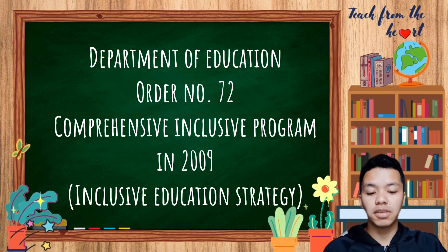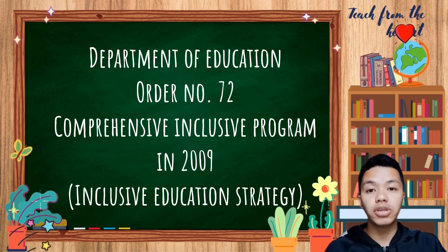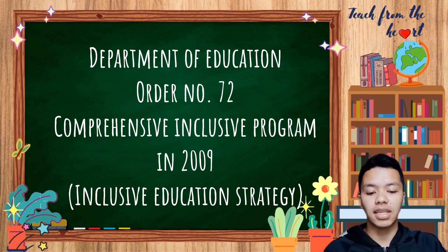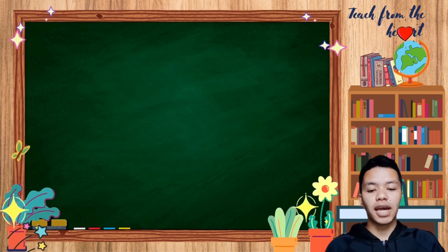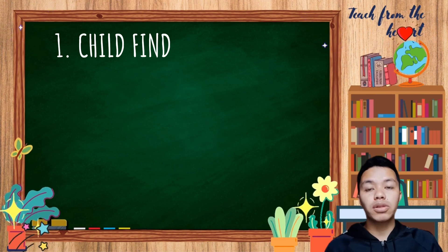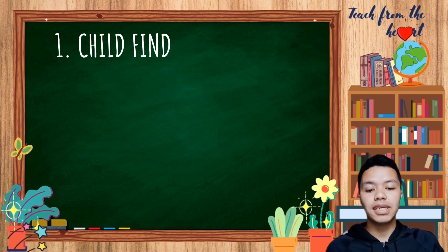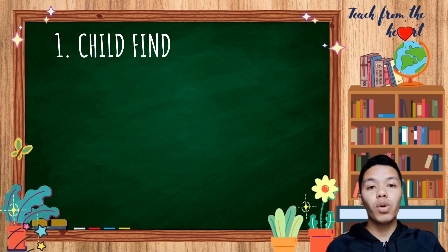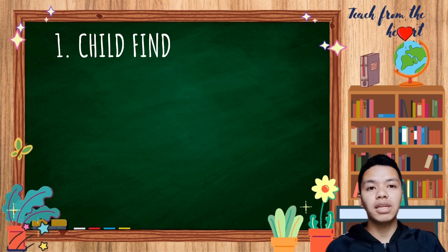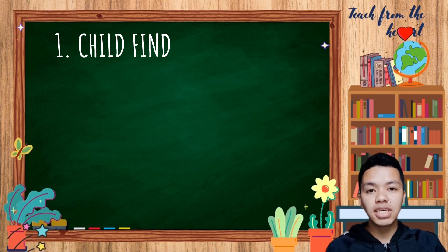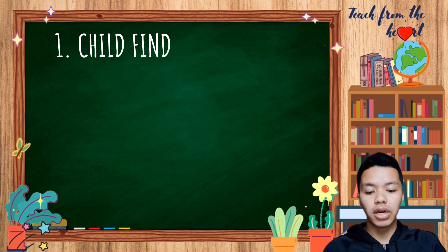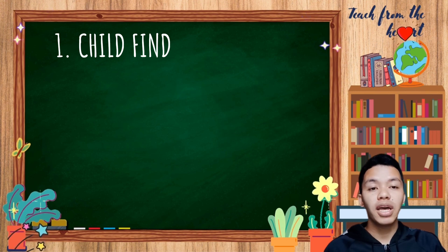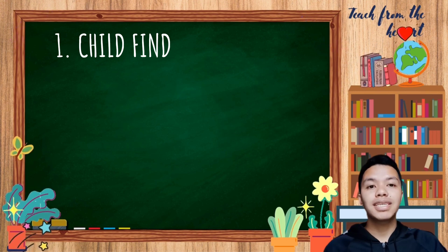The first component is Child Find. This is about locating learners with disabilities, giftedness, and talents who are not in school through the Family Mapping Survey, Advocacy Campaigns, and networking with local health workers to be enrolled in special education centers or the school nearest to their home.